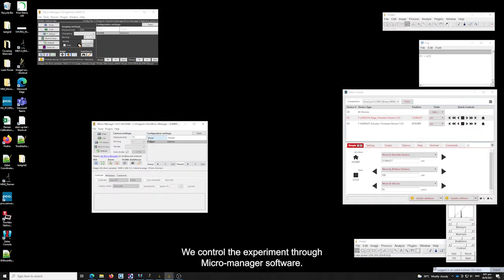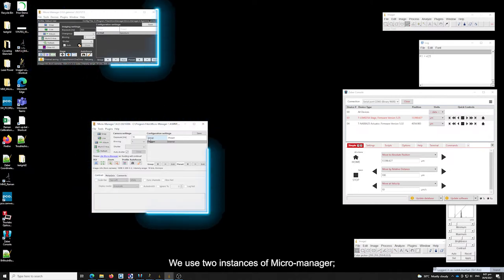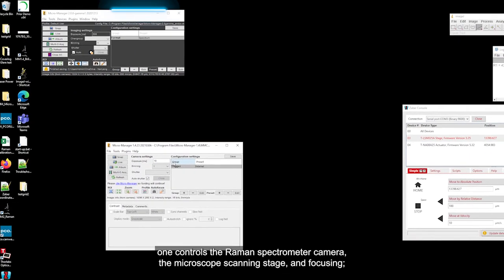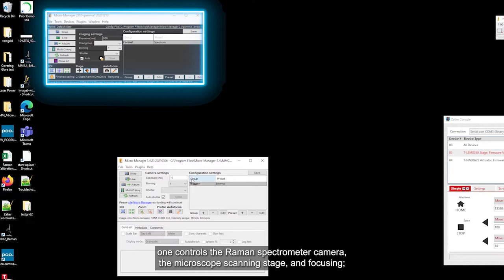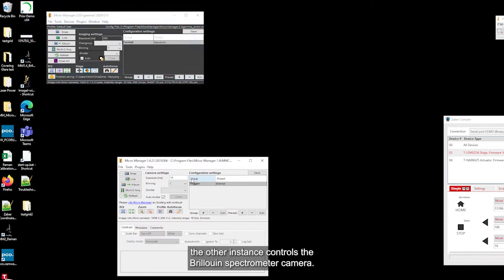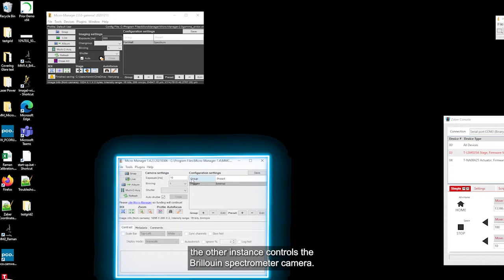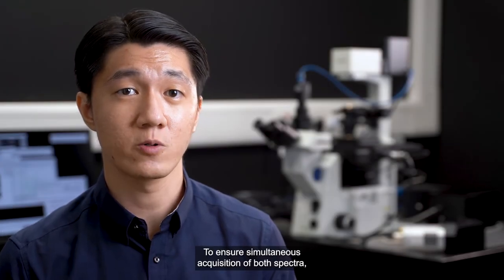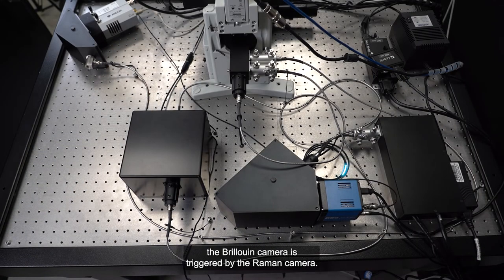We control the experiment through MicroManager software. We use two instances of MicroManager. One controls the Raman spectrometer camera and the microscope scanning stage and focusing. The other instance controls the Brillouin spectrometer camera. To ensure simultaneous acquisition of both spectra, the Brillouin camera is triggered by the Raman camera.